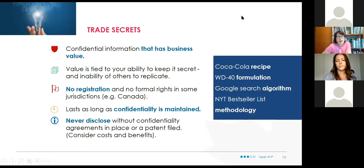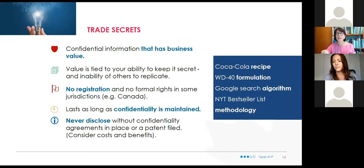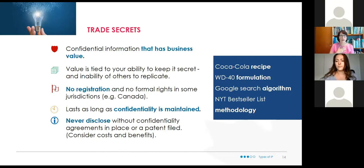Trade secrets are in some ways the opposite of a patent. Because you fully disclose with a patent, you do the opposite for a trade secret — you have to keep something secret. When WD-40 and Coca-Cola came up with their formulas, they probably could have gotten patents, but they chose to keep them as trade secrets instead. The reason is that patents are good for 20 years, and after that it's open to anyone. After 20 years, whoever you've described your invention to in the patent can copy it — that's how you get generic drugs.